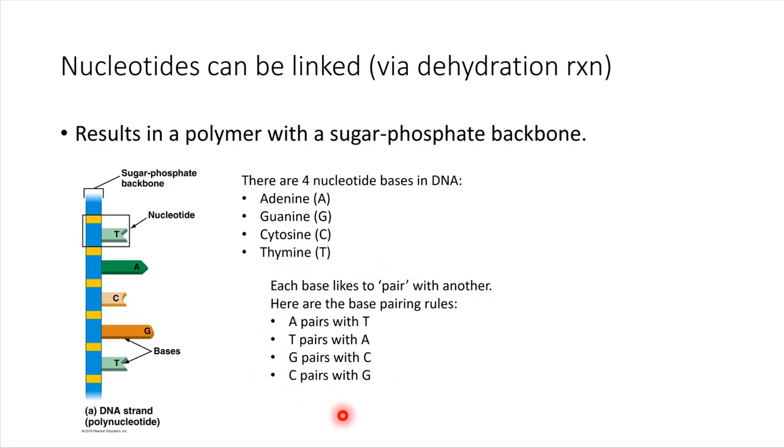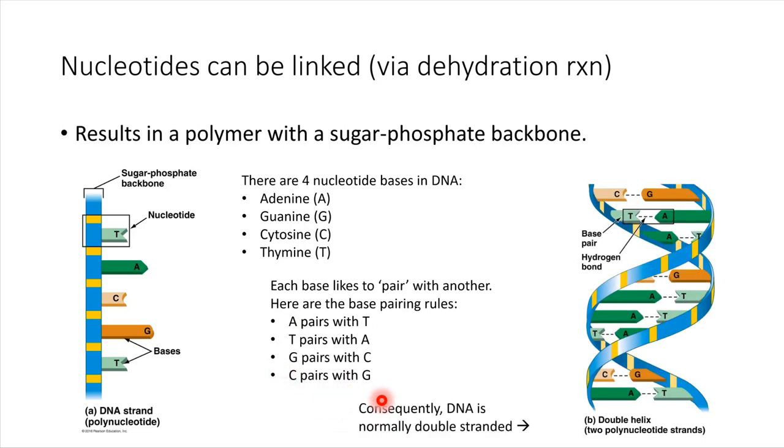Taking base pairing into consideration, DNA tends to be double-stranded. It forms what's called a double helix, just due to the base pairing taking place. Here's one strand of DNA, and here's another strand. They tend to wind around each other and form this double helix.